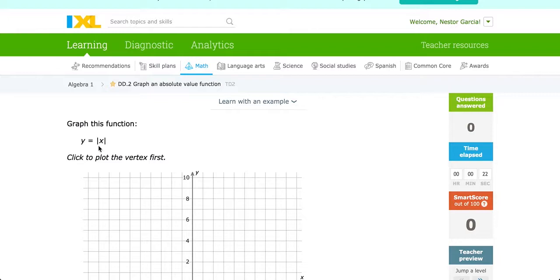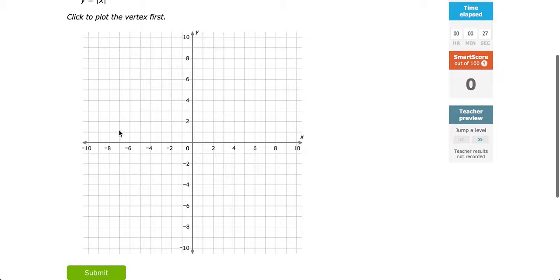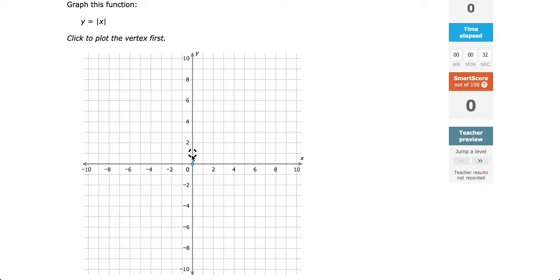Graph an absolute value function. Here we have the parent function y equals the absolute value of x. Recall that this function starts at the origin and from here we rise 1 over 1.